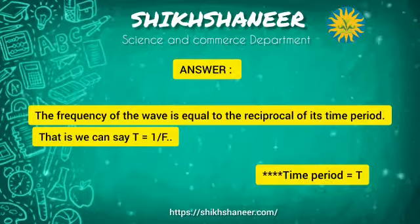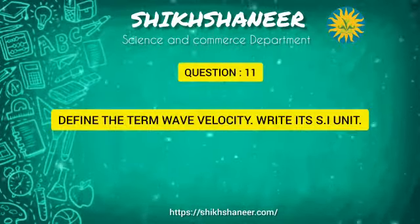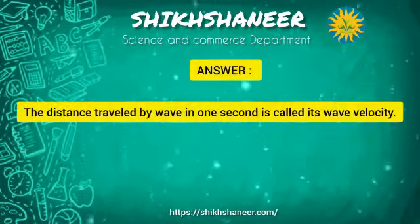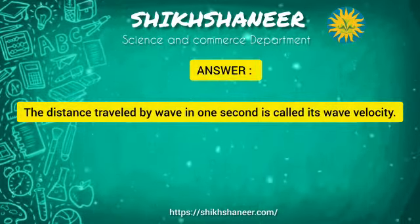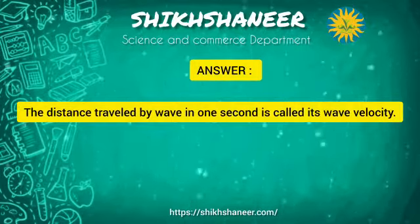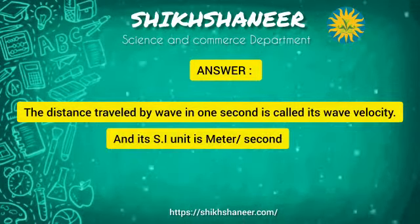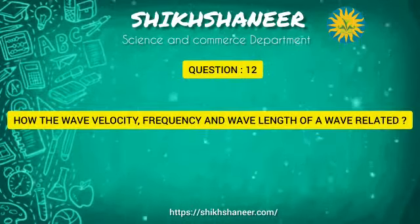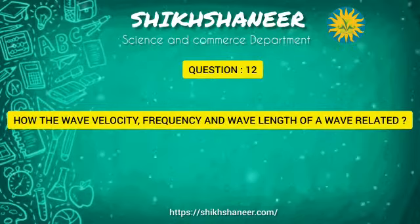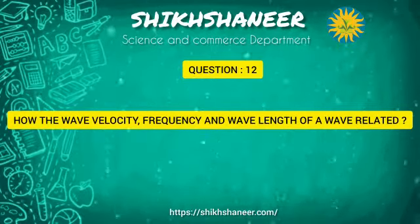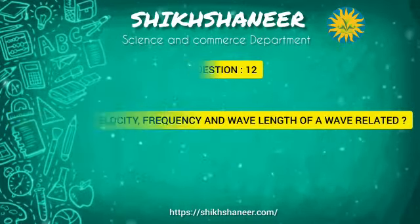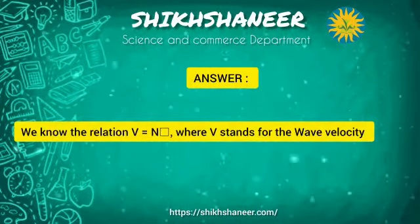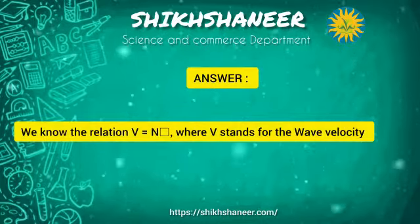Define the term wave velocity and write its SI unit. The distance traveled by a wave in one second is called its wave velocity, and its SI unit is meter per second. The wave velocity, frequency, and wavelength are related by the equation V = nλ, where V is wave velocity, n is frequency, and λ is wavelength.